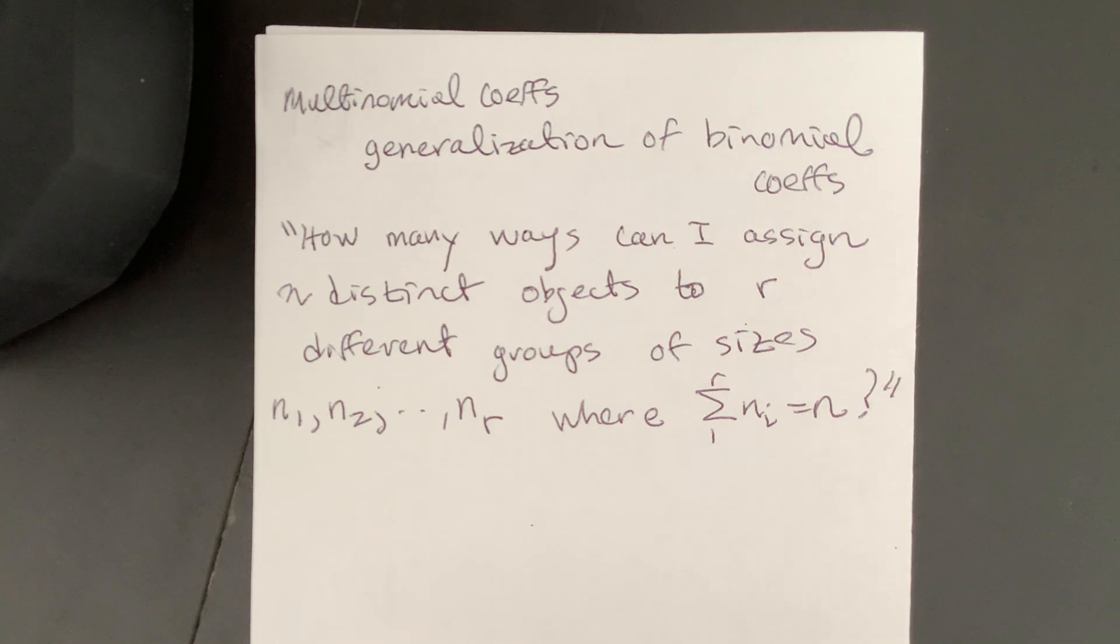So instead of saying how many ways can I choose groups of a certain size from n distinct objects, we want to know how we can distribute those n distinct objects amongst r different groups.